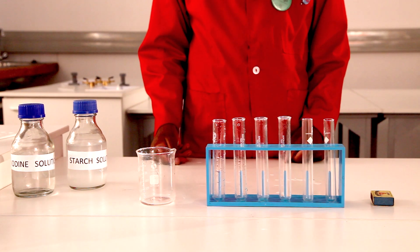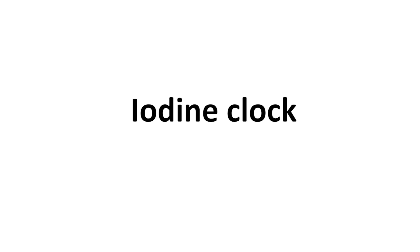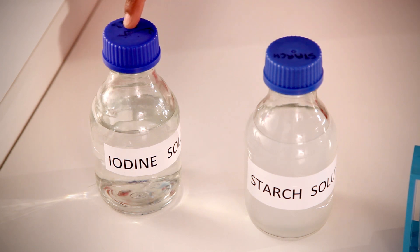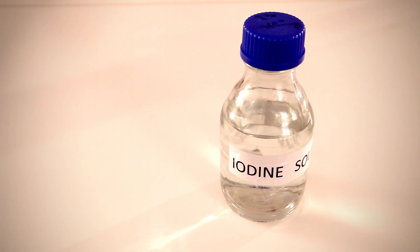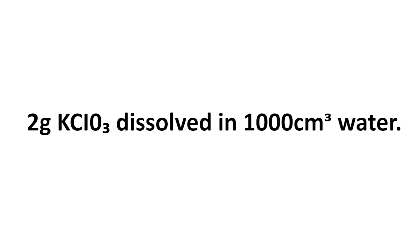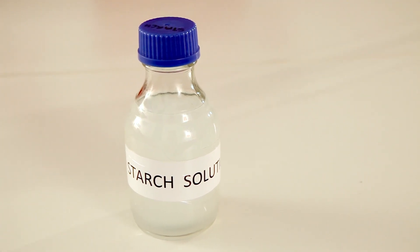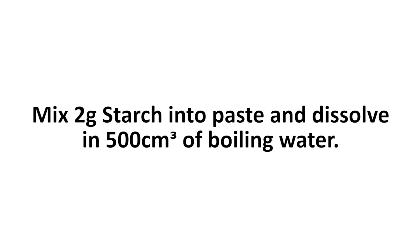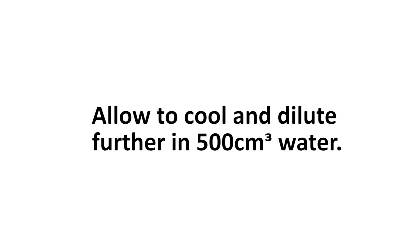To do this experiment, one needs a reaction that is easy to repeat. The iodine clock is the most suitable. Stock solutions of iodine and starch need to be prepared first. For the iodine solution, dissolve 2 grams of potassium iodate in 1000 cm³ of water. For the starch solution, mix 2 grams of starch into a paste with a little water and dissolve this in 500 cm³ of boiling water. Allow the solution to cool.